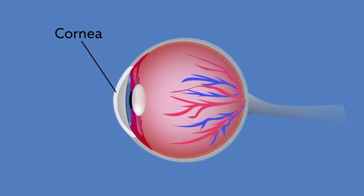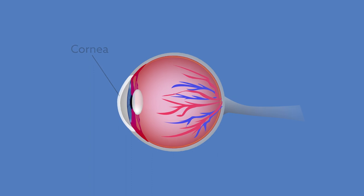The cornea forms the outermost surface of the eye, and many disorders affecting eyesight arise from defects in this tissue, including some inherited forms of blindness.